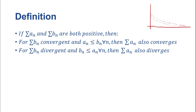But if we determine that b sub n is less than a sub n, and b sub n diverges, then if a sub n is always greater than b sub n, then we know that a sub n is also going to diverge, because it needs to be greater than b sub n for all n. So that's kind of how that works. That should be fairly reasonable for many of you to imagine. So let's do an example.